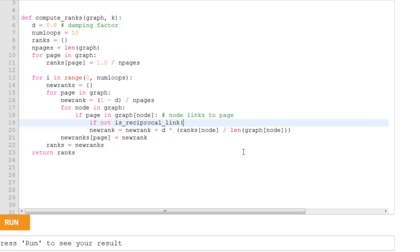If we don't have a reciprocal link in the graph, we're going to include node in the calculation if the link node to page is not reciprocal. So I just need to adjust the spacing here and that's all the change that we need to do to compute ranks.